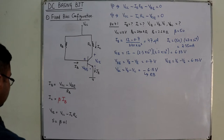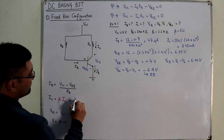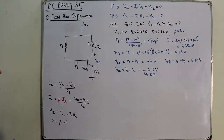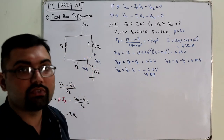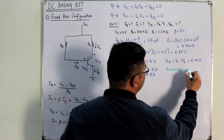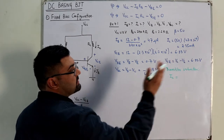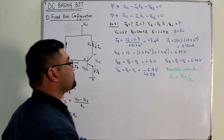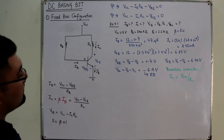Transistor saturation refers to the maximum collector current. The saturation formula is IC(sat) = (VCC minus VCE) divided by RC. Transistor saturation occurs when the maximum collector current flows, and that happens when VCE equals zero. So IC(sat) = VCC divided by RC. Load line analysis will be covered in the next video.